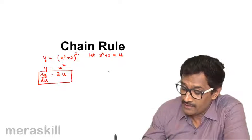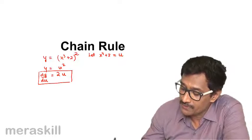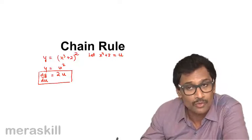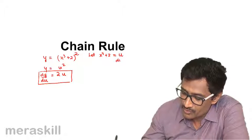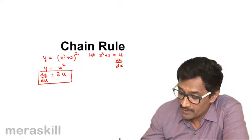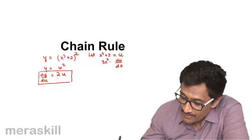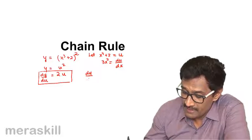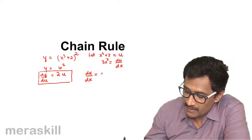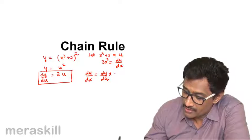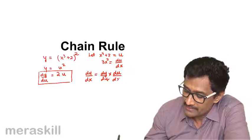To find dy/dx, we need to find du/dx. Now since u is x³ + 2, we need to find the derivative — so du/dx is the derivative of x³ + 2, that is 3x². Now, dy/dx is nothing but dy/du multiplied by du/dx.